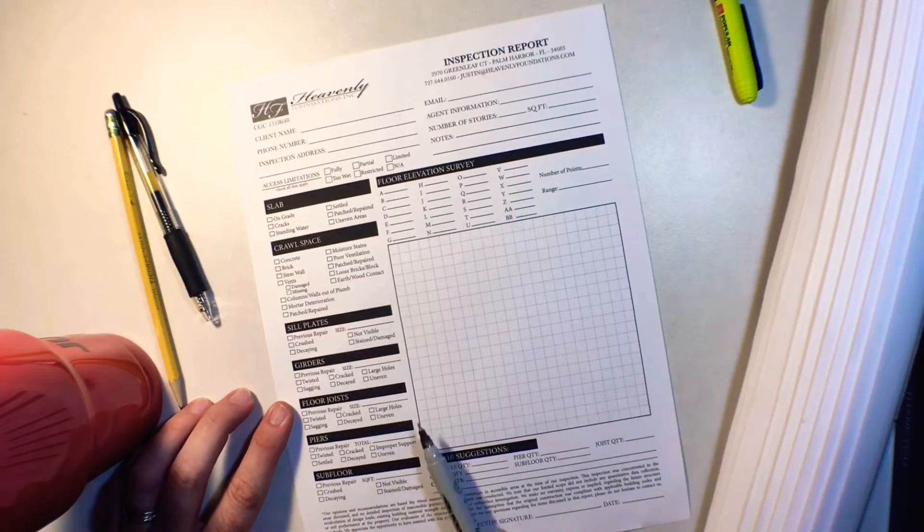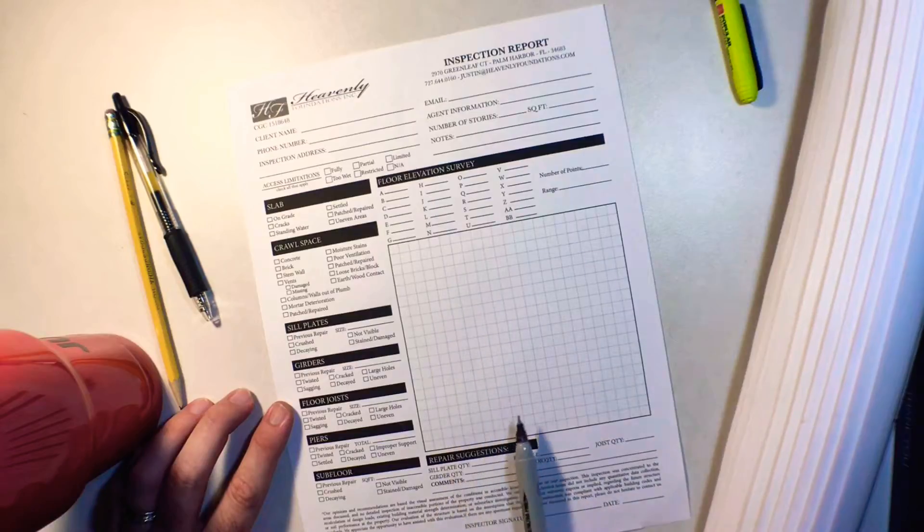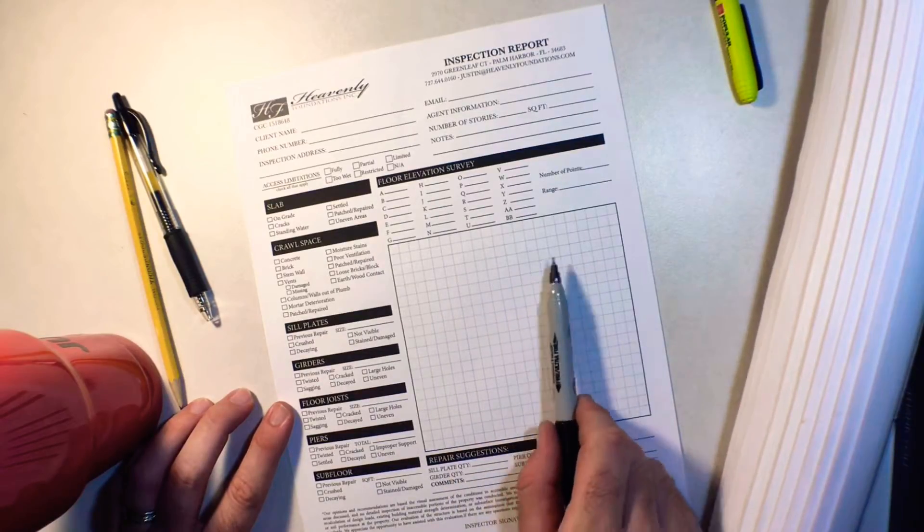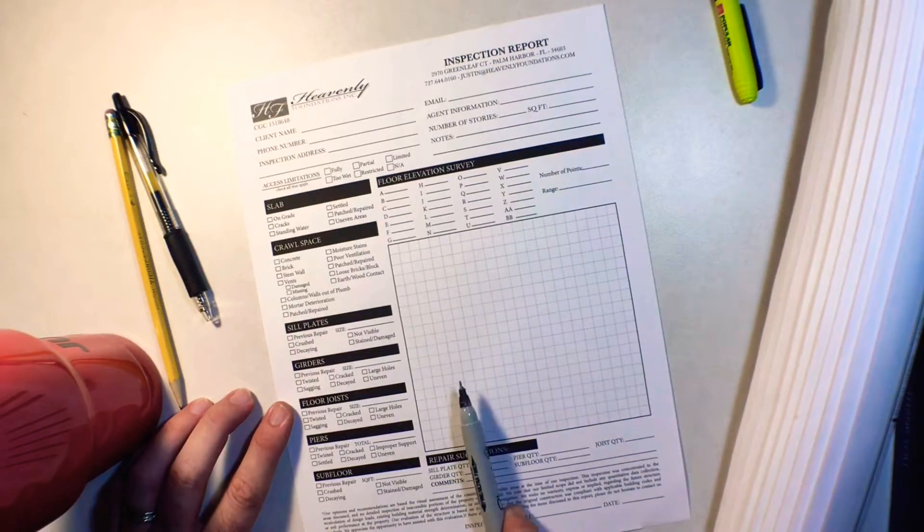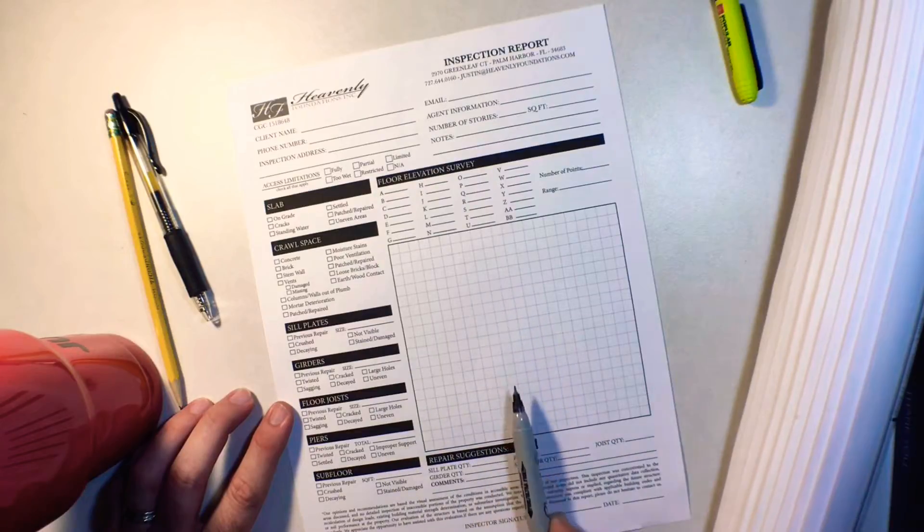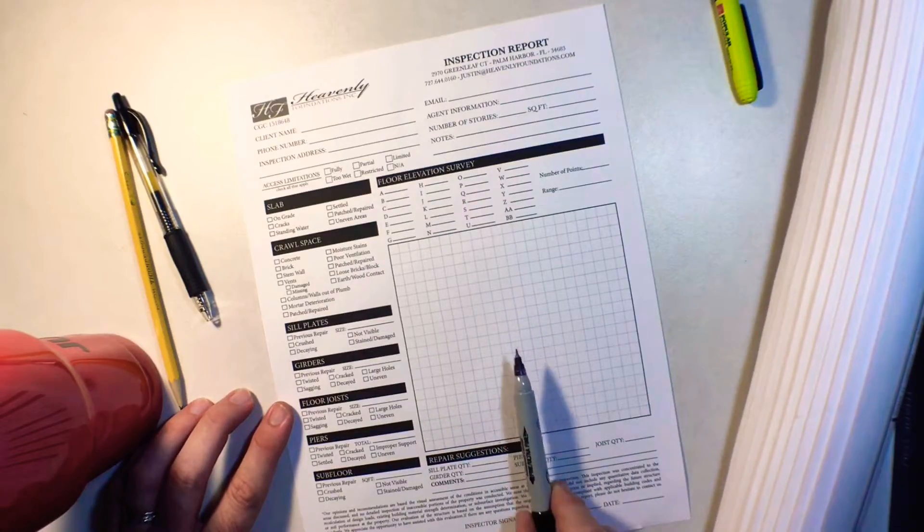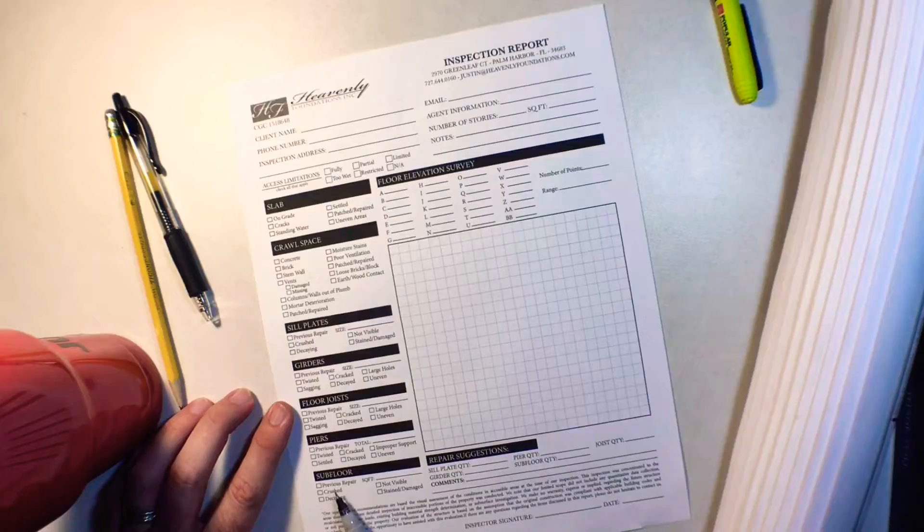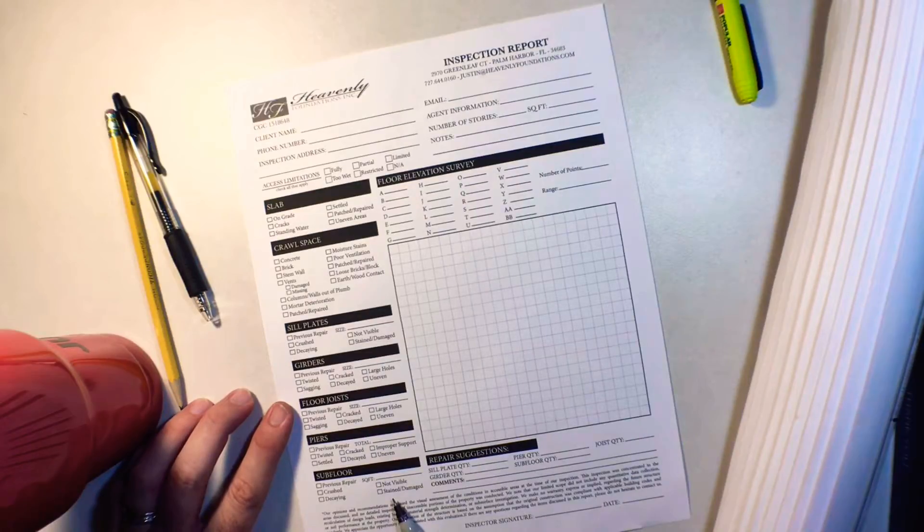Once we determine all this information, again, we're going to draw out your house here and indicate on there where the sill plates are damaged, where the girders are damaged, where there's piers that need to be replaced. In addition to that crawl space, we're going to check out the subfloor from up underneath to see if there's any crushed or decaying areas, if there's staining that's going on or any soft spots in there, and we can get in there and determine if repairs are needed on that.